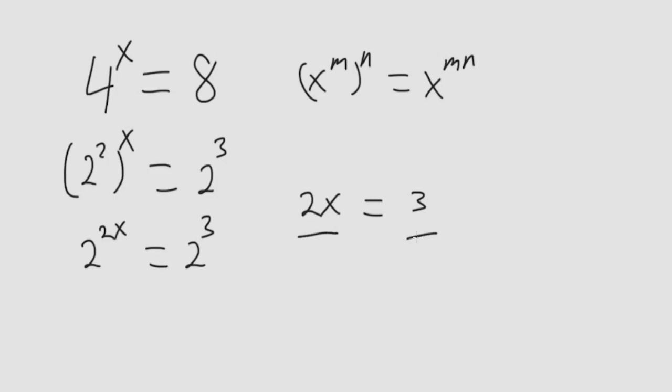Divide both sides by 2. 2 cancels. We get that x is equal to 3 halves.